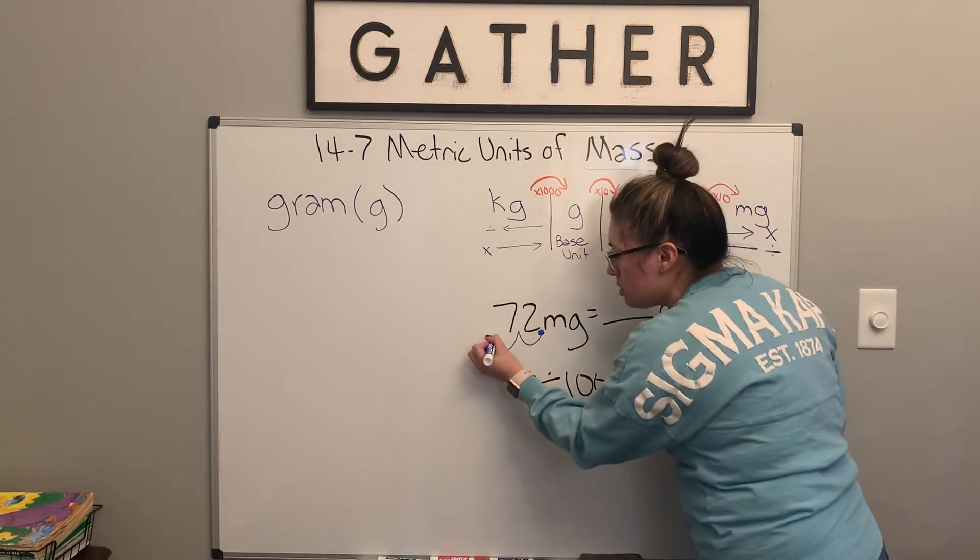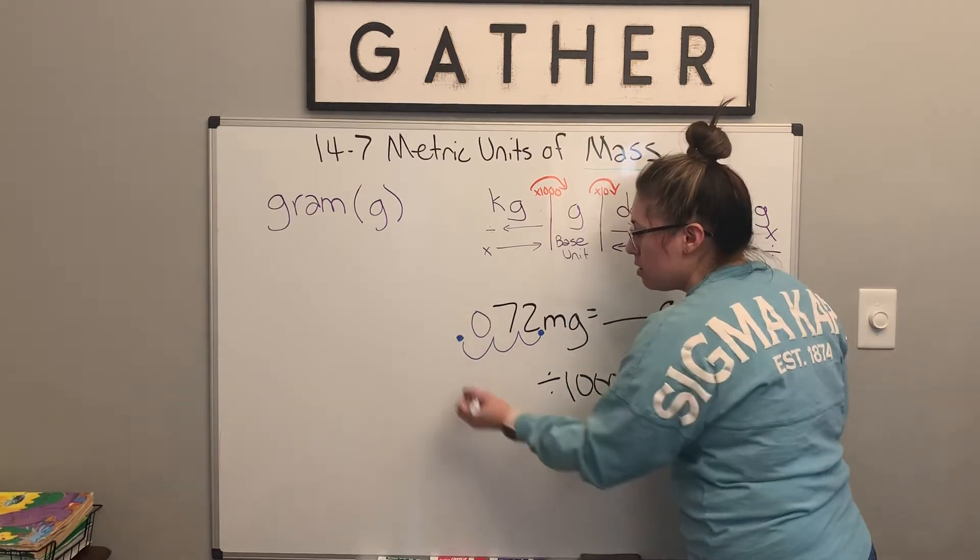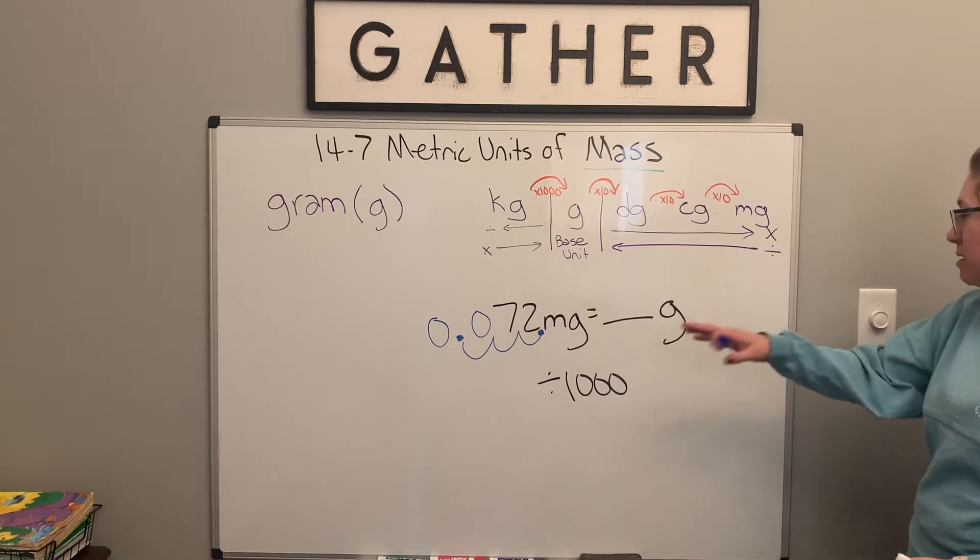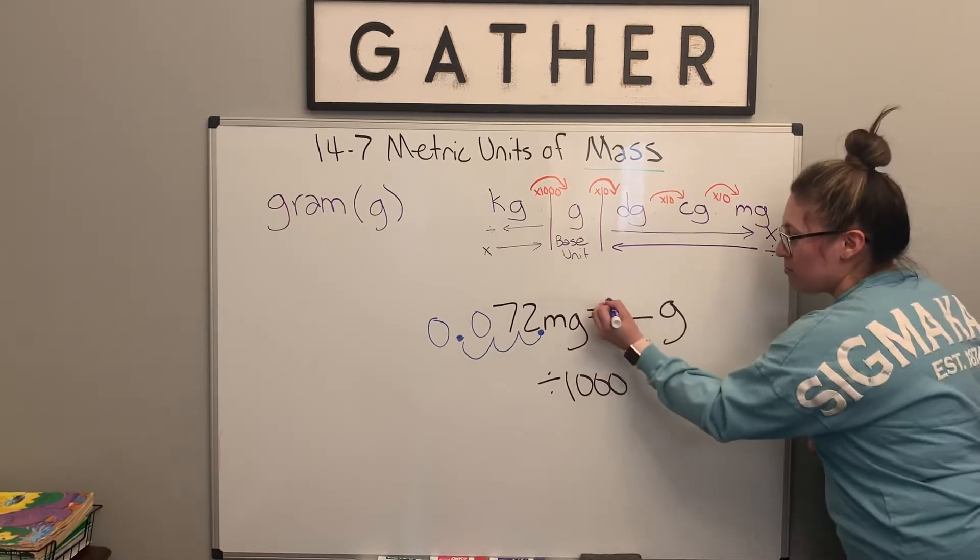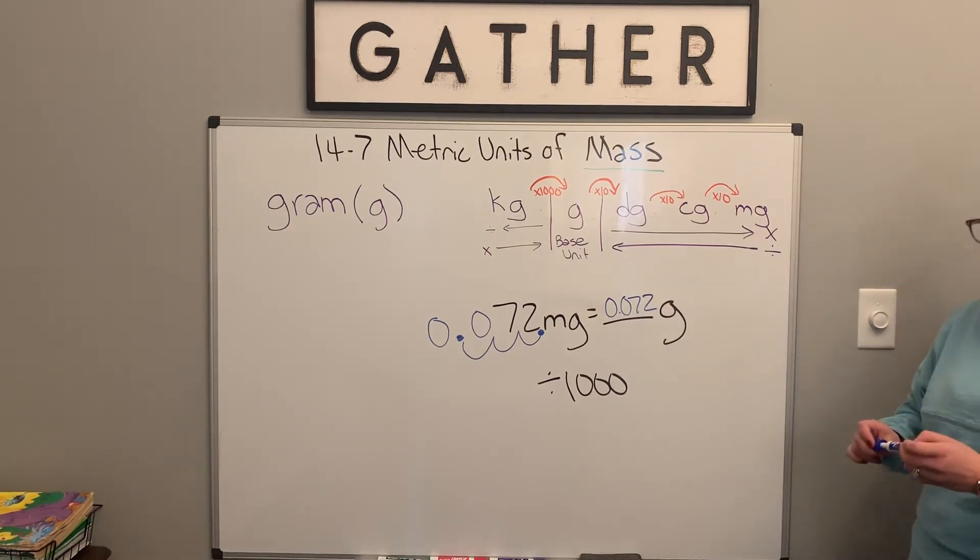So we're going to go one, two, three. Our new decimal point is going to go there. And we're going to use zeros as placeholders. So we have 0.072 grams is equal to 72 milligrams.